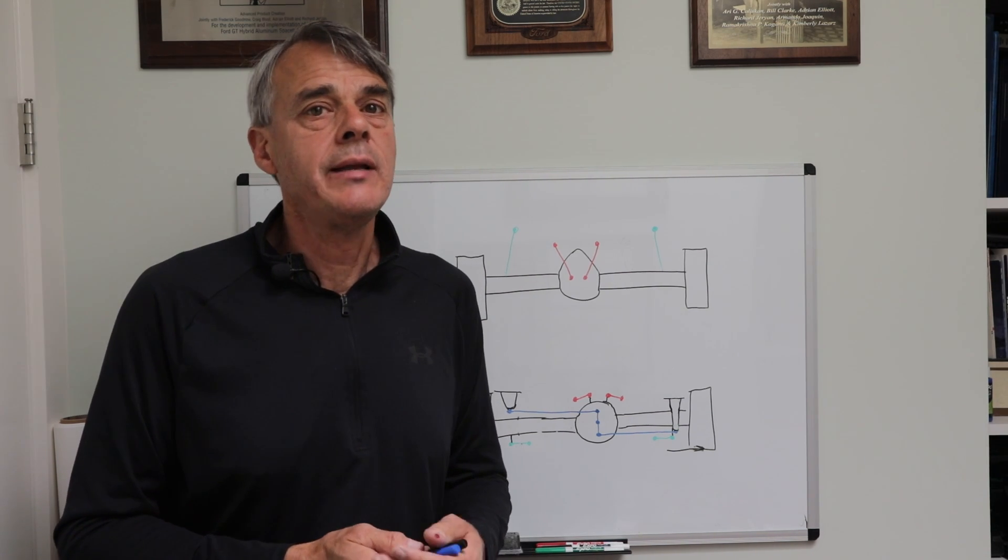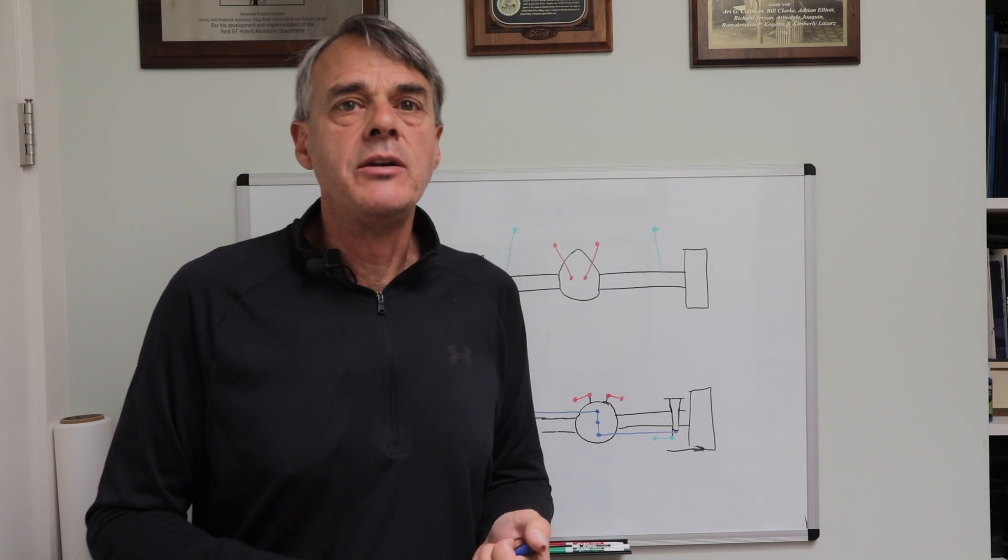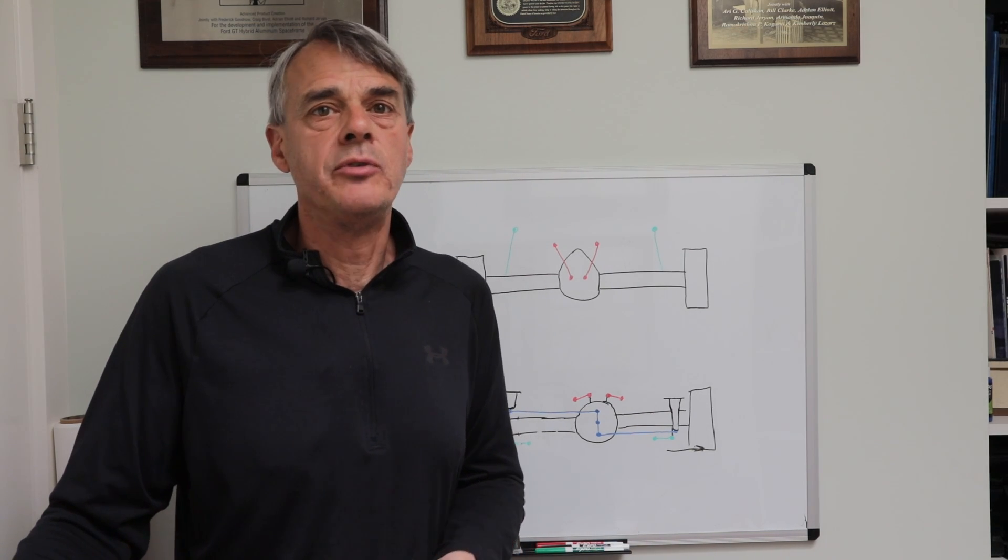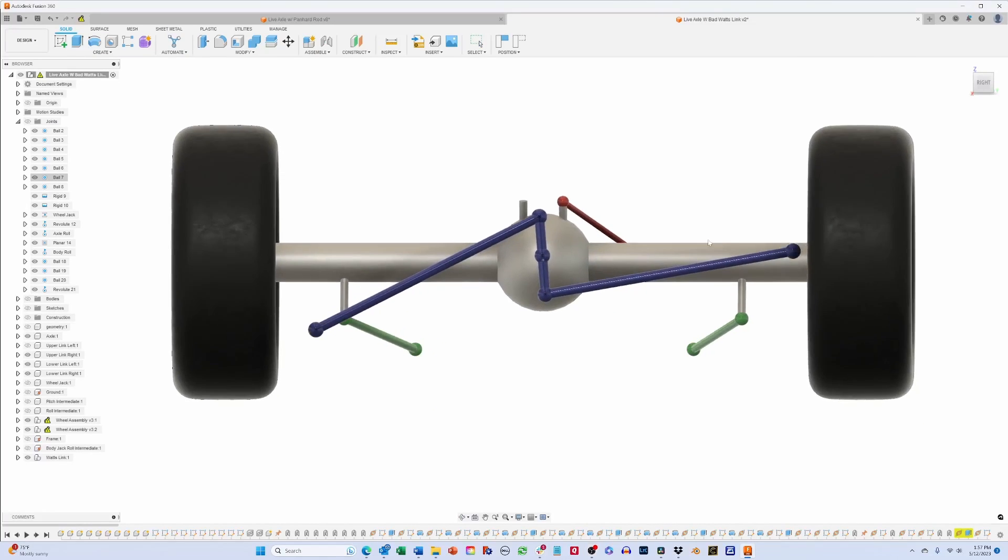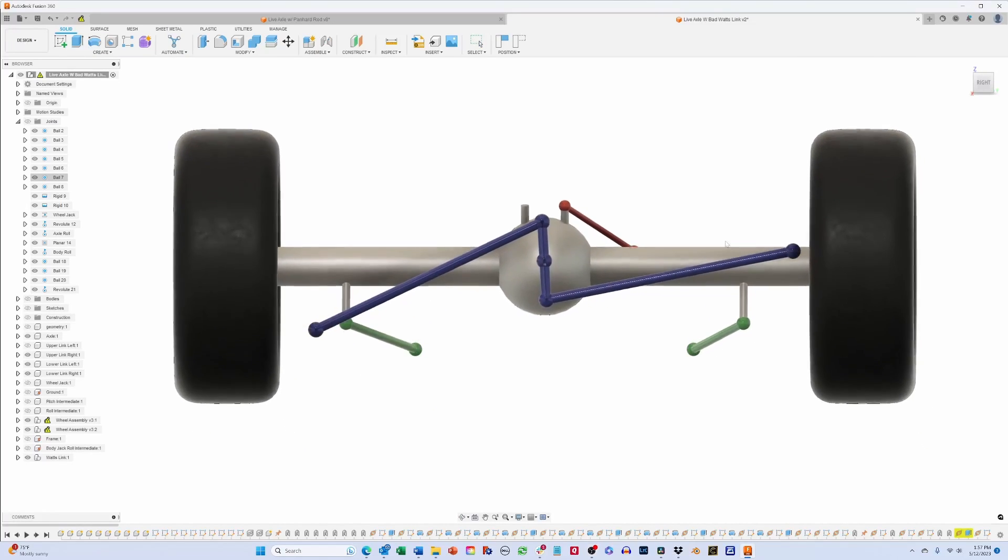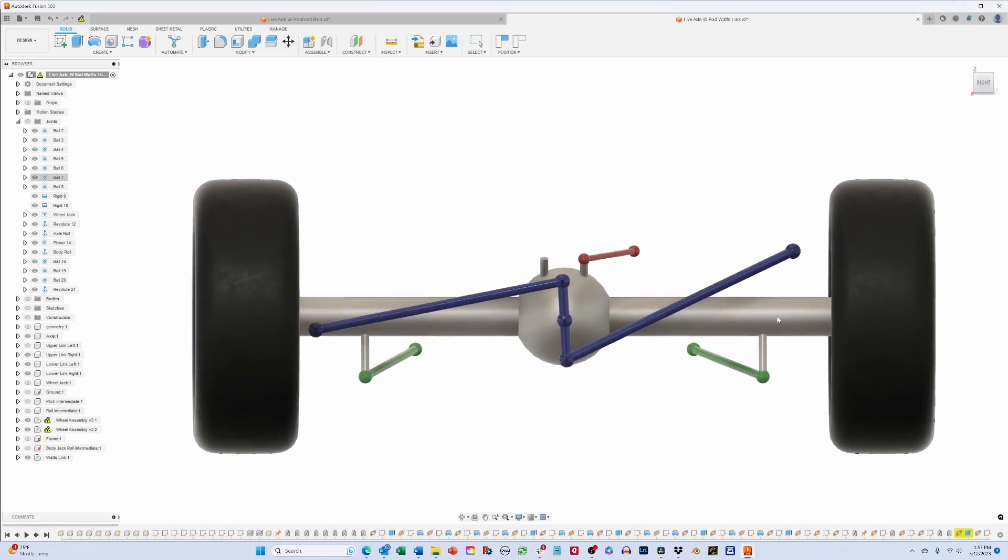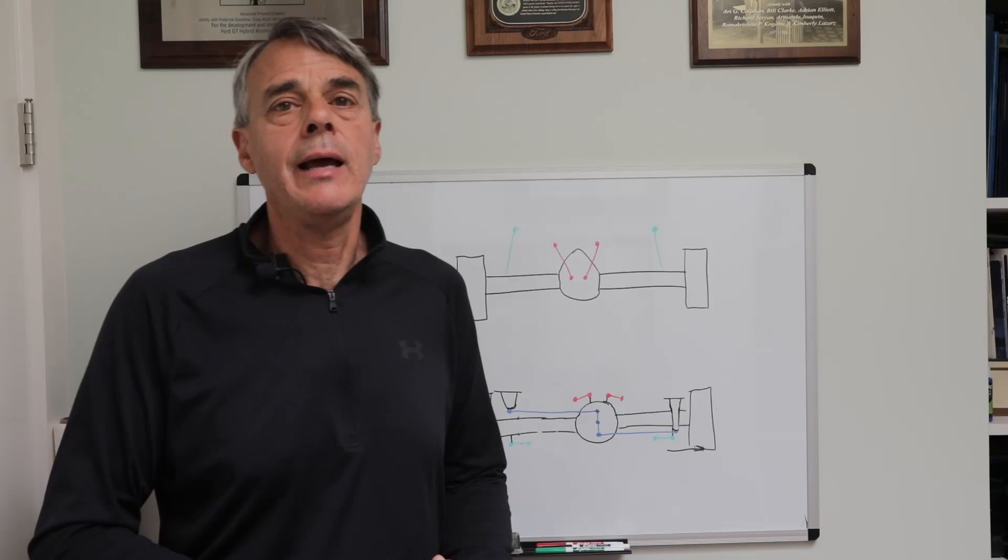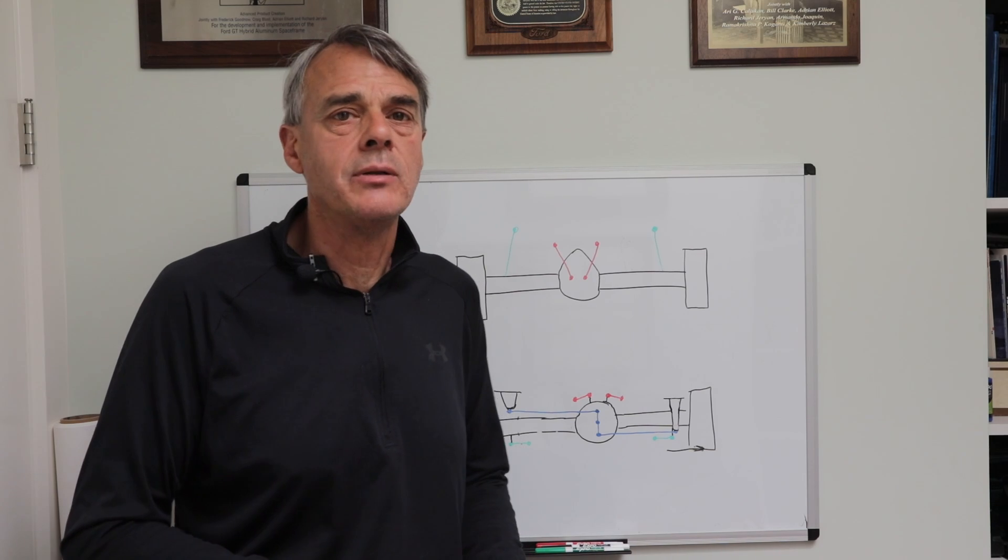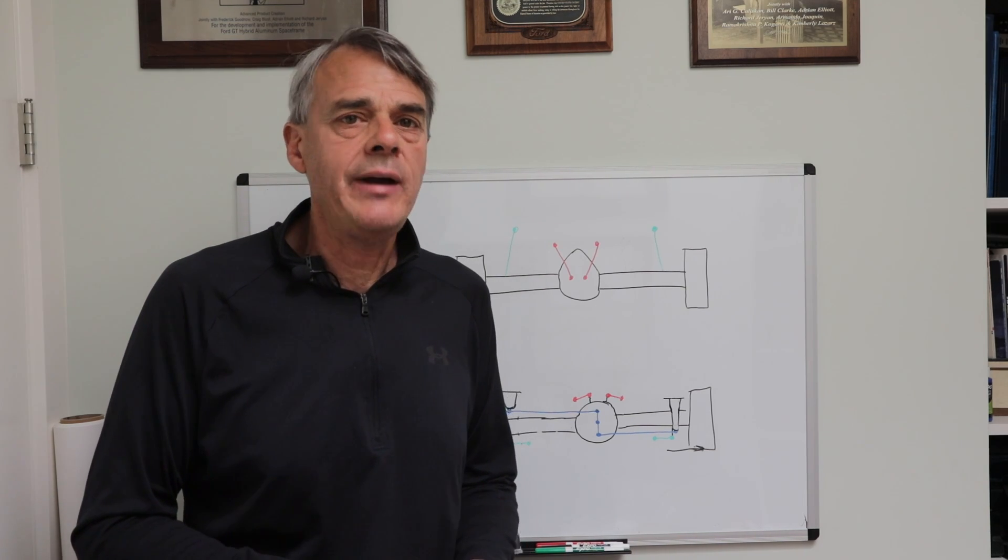Here again though, it is important that the links start out horizontal. If they don't, the center pivot will not move vertically and will force the axle to move at an angle. Here you can see what happens if the links do not start out horizontal. The axle is clearly moving up and down at an angle. Here in the computer, I've had to remove one of the upper links because the Watts link and the other links are trying to move the axle in different directions now and will fight each other.